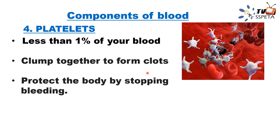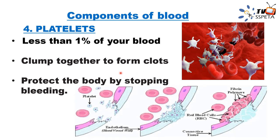Platelets protect the body by stopping bleeding. Here we can see a diagram where there is a cut — an open injury. The platelets come together and join, forming a barrier to prevent plasma and red blood cells from escaping. So it prevents blood from moving out and losing. You can see the barrier forms and blood clots.